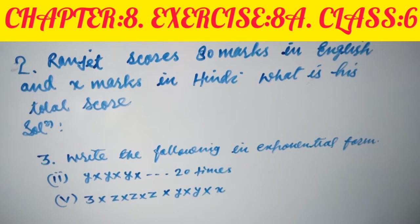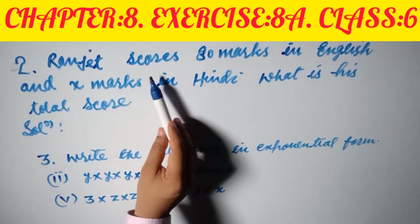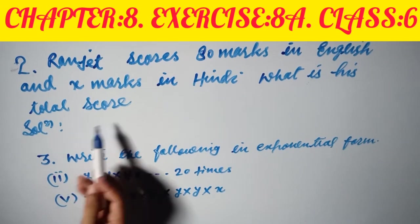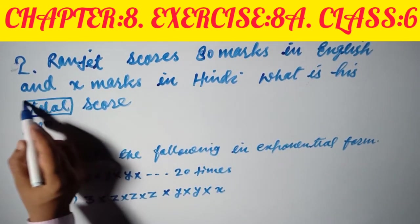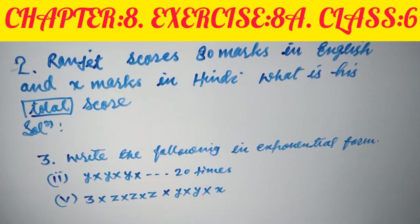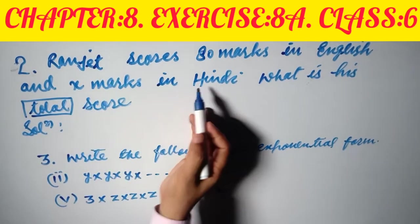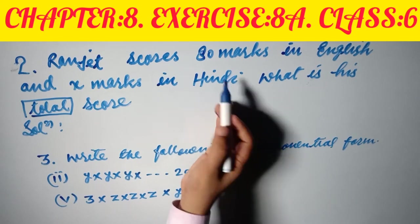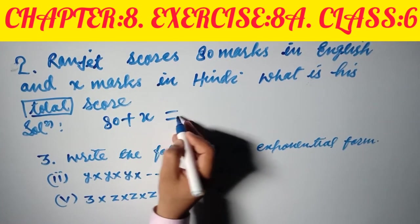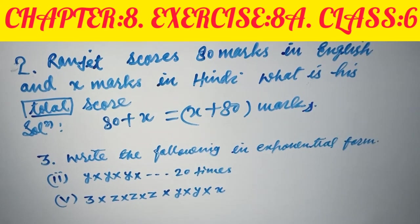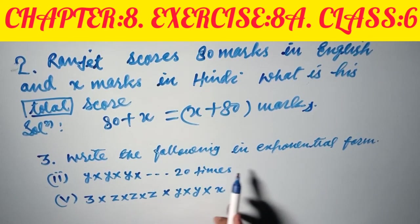Question number two: Ranjit scores 80 marks in English and x marks in Hindi — what is his total marks? Total means we add. Ranjit got 80 marks in English and x marks in Hindi, so total marks equals 80 plus x, or x plus 80. That is the answer.